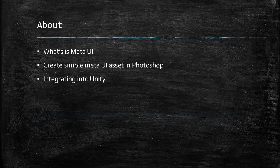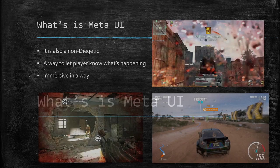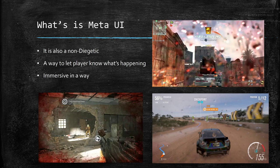Moving on very quickly. In today's tutorial, we're going to cover how to recreate the assets in Photoshop - just a quick and rough tutorial - as well as how to put all these assets we've created into Unity and integrate them into our existing game. Meta UI is a non-diegetic UI, a way to let players know what's happening, like if you take a hit, get damaged, or your health is low. It's immersive - you don't show physical data like 'your health is 10 left'. Instead, you show it in a visual representation in a subtle manner.